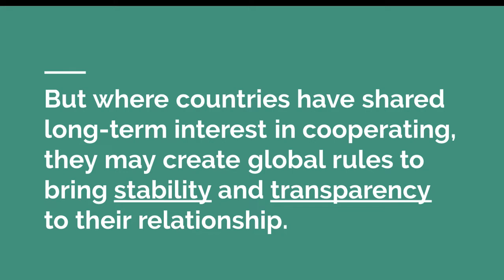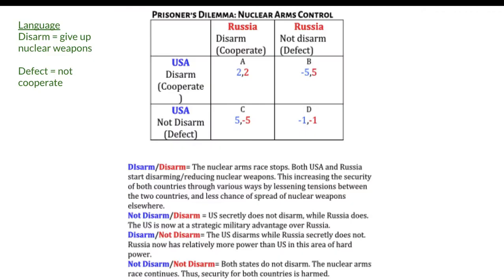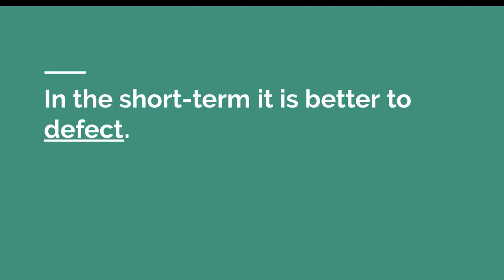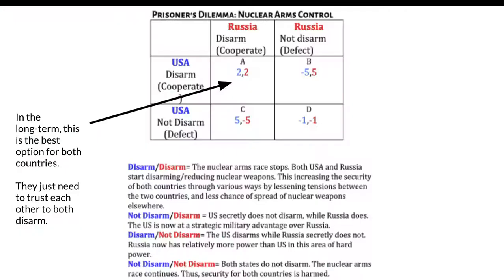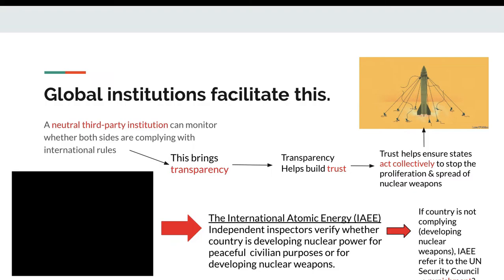But where countries have shared long-term interest in cooperating, they may create global rules to bring stability and transparency to the relationship. If you decide not to disarm and I do, I'm never going to cooperate with you again. So the next iteration of this negotiation is always going to be both of us defecting, because neither of us trust each other. So in the long term, to build trust and create stability in the relationship, we want to make sure we can cooperate. In the long term, mutual disarmament is the best option for both countries - it reduces tensions and avoids arms escalation where we're both harming each other's security. We just need to be able to trust each other to both disarm.